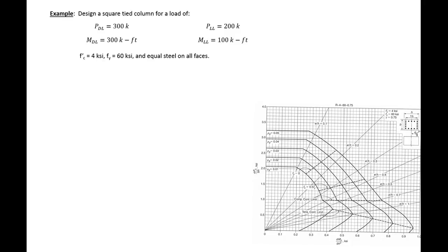In this example problem, we're going to be designing a square tied column. Typically, we would need to first determine the loading applied to this column. In this example problem, we're given our dead load axial load and moment, and our live load axial load and moment.